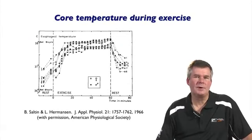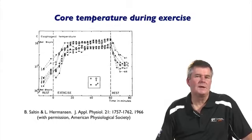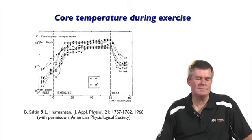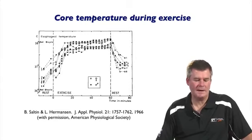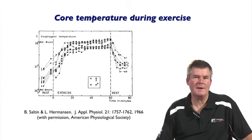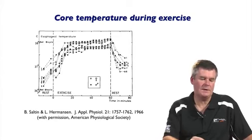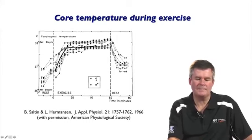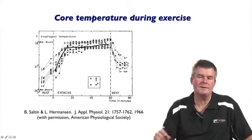If we look at body temperatures during exercise — often measured by putting a thermistor into the esophagus or another part of the gastrointestinal tract, with rectal temperature often used — here is the esophageal temperature response to exercise at about 60 to 70% of VO2 max for about an hour. You see a rapid increase in temperature and then a slower, steady level or slight increase.